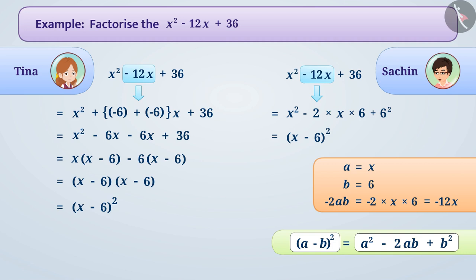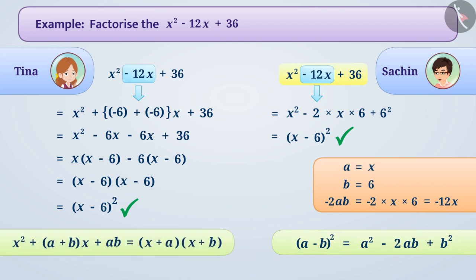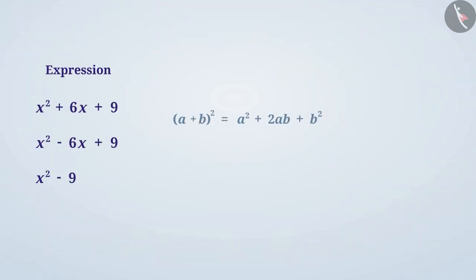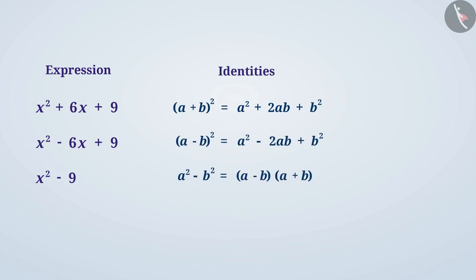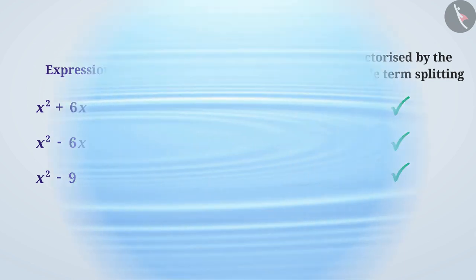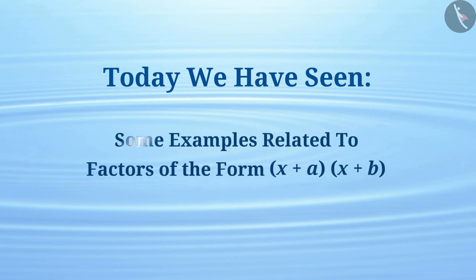Therefore, the factorization can be written as (x - 6)², similar to the left side of the identity. Both Tina and Sachin obtained the correct answer. We have seen that factorization can be done using a standard identity as well as by splitting the middle term. Generally, expressions corresponding to the right side of these identities can also be factorized by middle term splitting. Today we saw examples of factors of the form (x + a)(x + b). In the next video, we will see some common mistakes related to them.